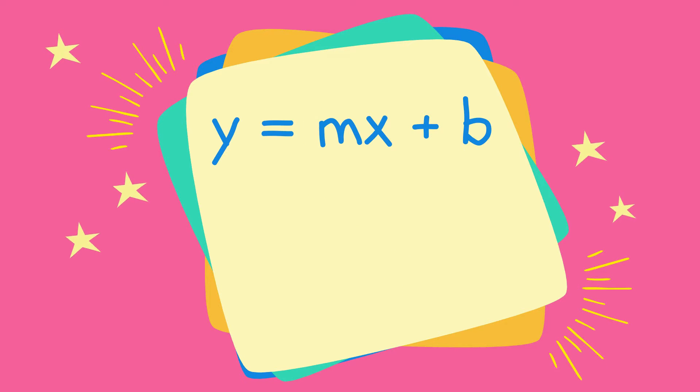It is written as y equals mx plus b, where m is the slope of the line and b is the y-intercept.